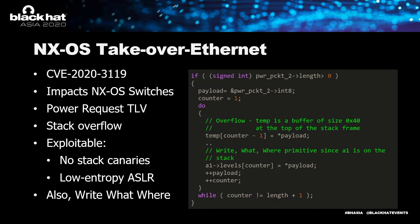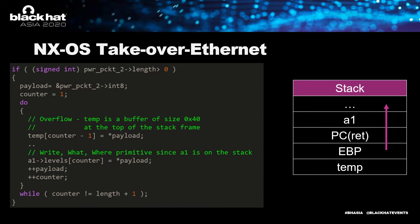The next zero-day affects the same NXOS-based devices. It is in the power request TLV and is a simple stack overflow — notably, it works even if the switch has no Power over Ethernet support because the parsing code is still present. We successfully exploited this zero-day due to no stack canaries and low-entropy ASLR. Besides the stack overflow, there is also a write-what-where primitive: A1 is a pointer on the stack and the payload is written to an offset of it, so when A1 is overwritten, we get both a stack overflow and a write-what-where primitive in the same exploit packet.